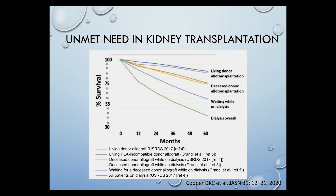This graph shows the percent survival for patients on dialysis, patients waiting on dialysis for a kidney transplant, and patients who have received transplants. Approximately 10 patients actually die in the U.S. waiting for a life-saving organ each day. There are over about 100,000 Americans currently on the transplant wait list, and over about 90,000 patients waiting for a kidney. There are at least half a million people in the U.S. who suffer from kidney failure requiring dialysis.